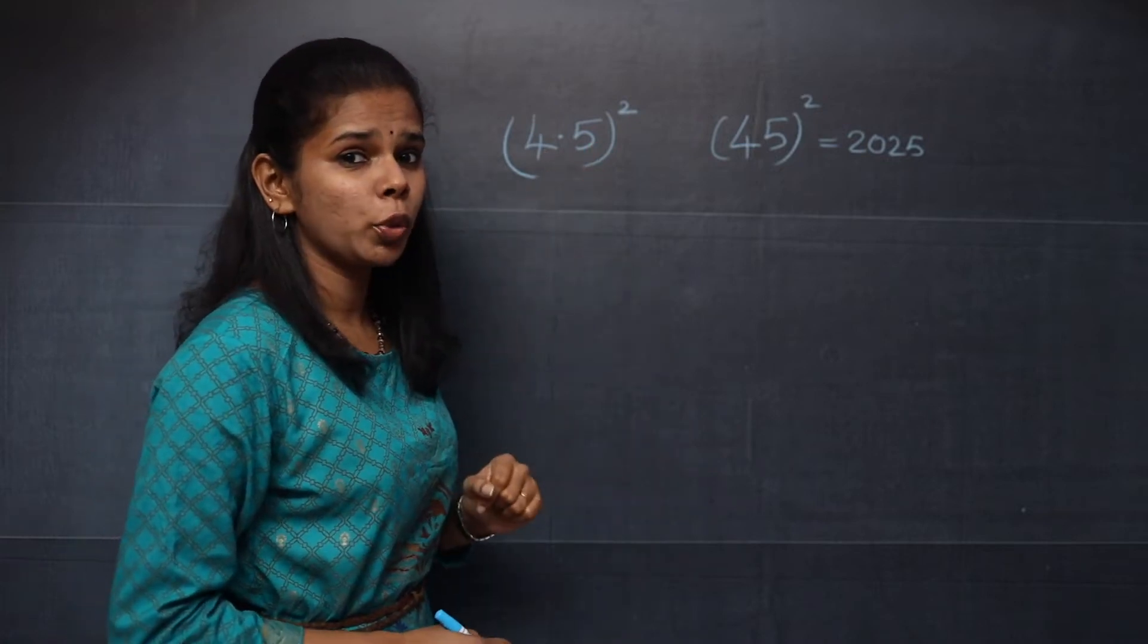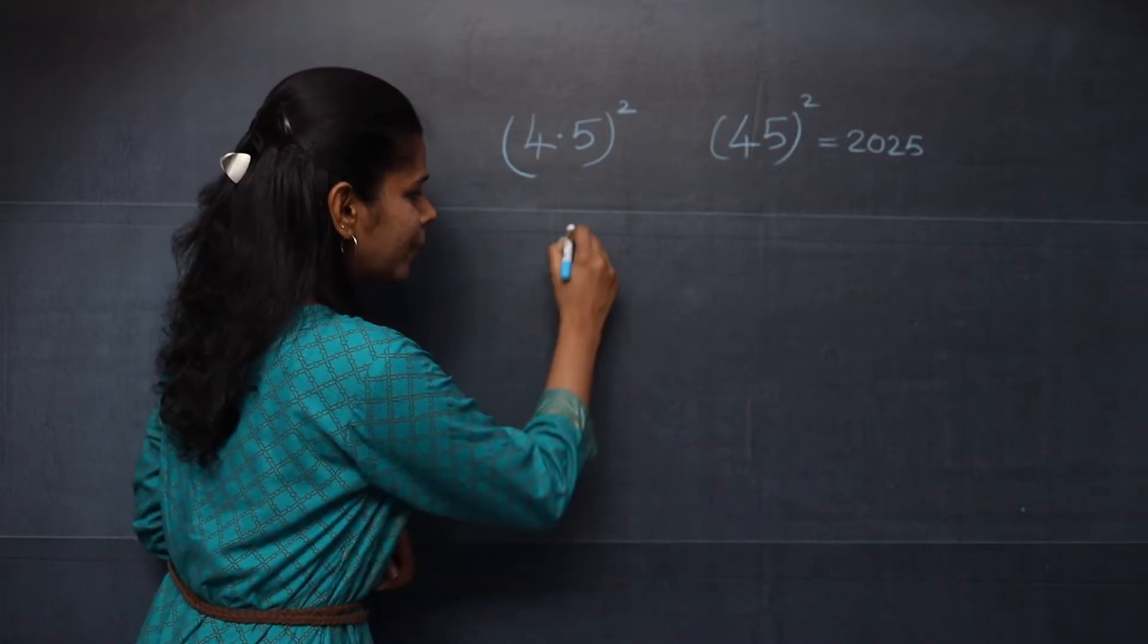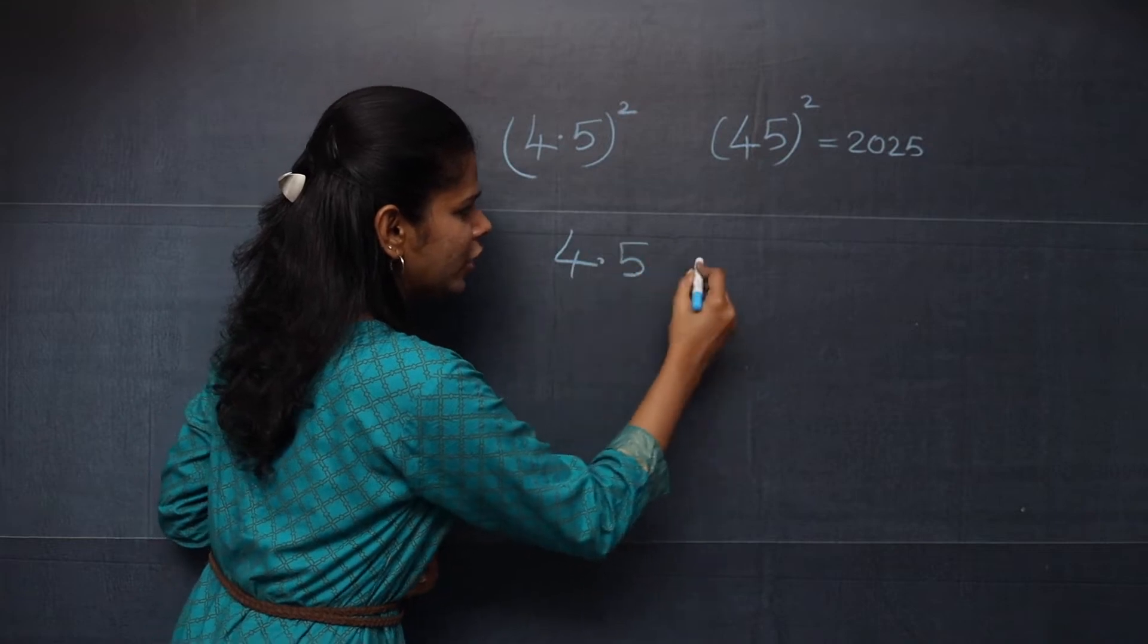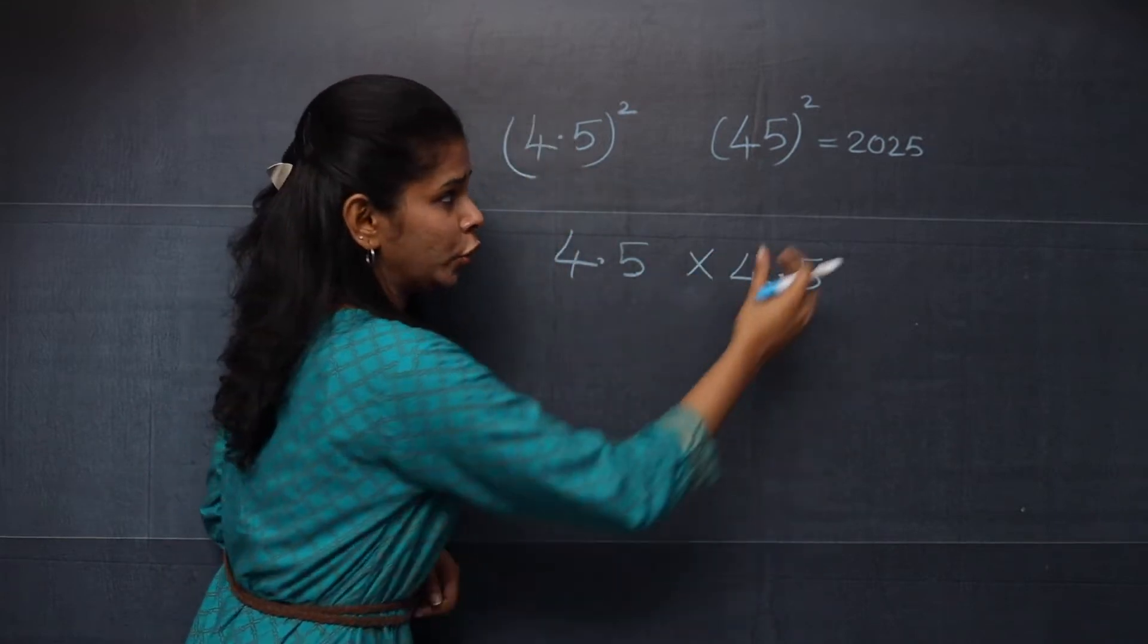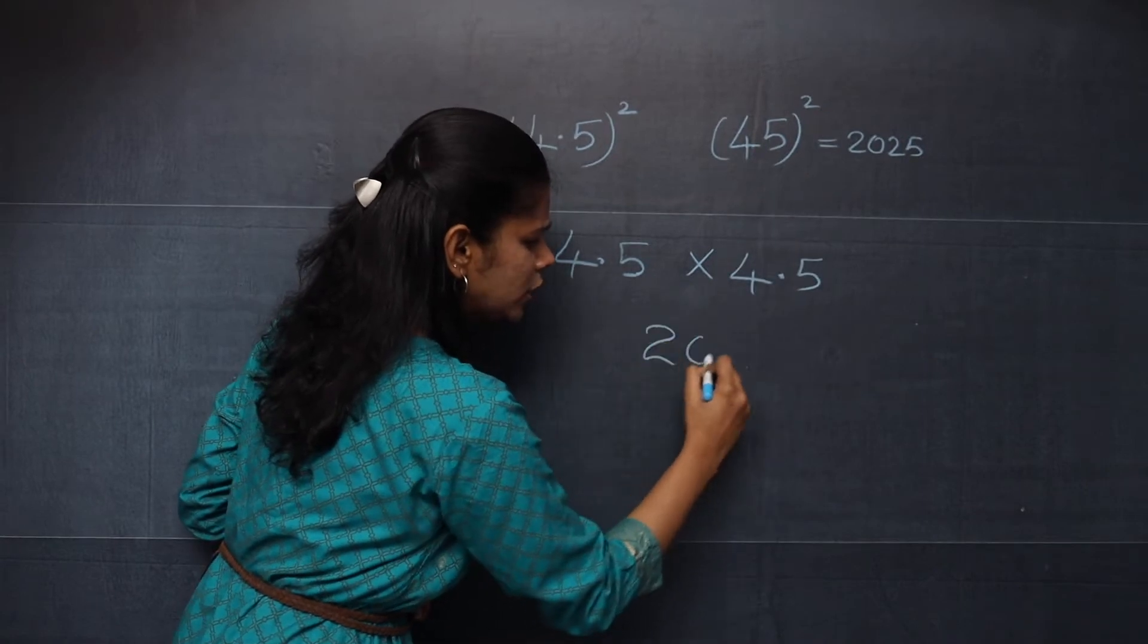4.5 whole square can be rewritten as 4.5 multiplied by 4.5. So you know the answer 2025.